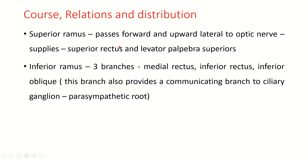The superior ramus passes forward and upward, lateral to the optic nerve, to supply the superior rectus and levator palpebrae superioris. The inferior ramus divides into three branches: one for the medial rectus, one for the inferior rectus, and one for the inferior oblique. The branch to the inferior oblique also provides a communicating branch — the parasympathetic root — to the ciliary ganglion.